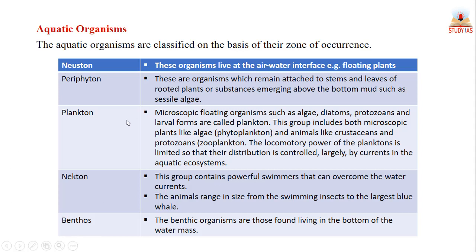Neuston are unattached organisms which live at the air-water interface — these include floating plants. Some organisms spend most of their lives on top of the air-water interface, such as water striders, while others spend most of their time just beneath the air-water interface and obtain most of their food within the water, such as beetles and backswimmers.